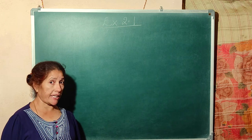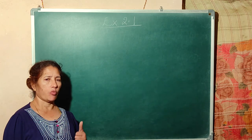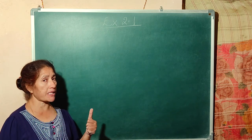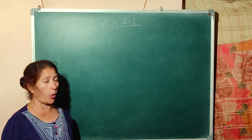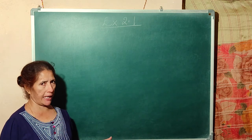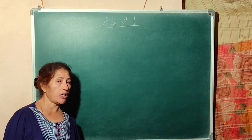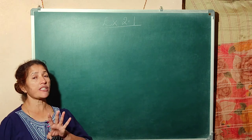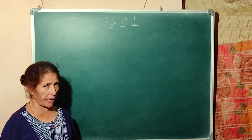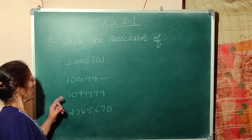Hello everyone. We are in the chapter of whole numbers. In the last class we studied what is the meaning of natural numbers, what is the meaning of whole numbers. Natural numbers start from 1, whole numbers start from 0. We studied how to locate any point on a number line, how to add, how to subtract, what is the meaning of predecessor, what is the meaning of successor, and we did 4 sums of exercise 2.1. Today, let us continue from the 5th question.